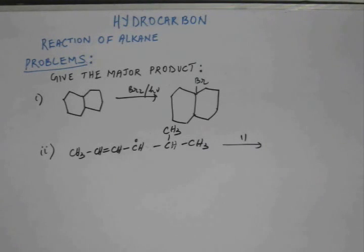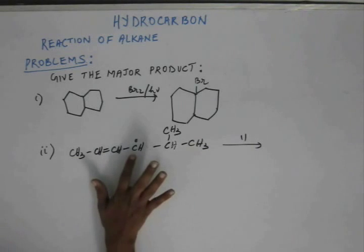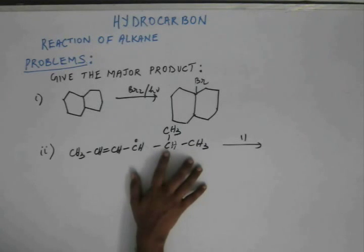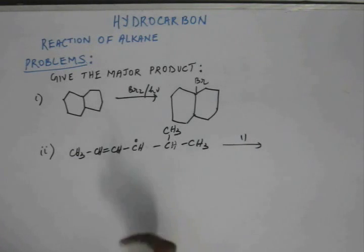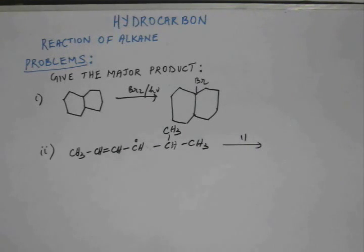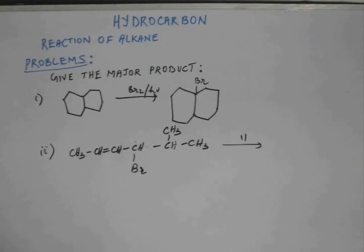As a rule of thumb, resonance makes a free radical more stable than one relying only on hyperconjugation. Here we have both resonance and hyperconjugation, so there is no doubt this allylic free radical is more stable than the tertiary one. We don't have to be fixed on tertiary carbon — we must focus on the most stable free radical. Since this carbon enjoys resonance, bromine will attach here, giving the major product.